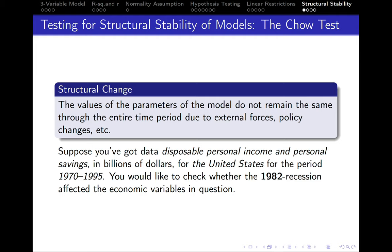Another type of testing we can undertake in econometrics is the test of structural stability models, the so-called Chow test. Before we proceed to the test, I would like to quickly explain what a structural change is.